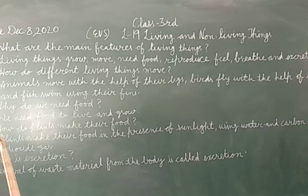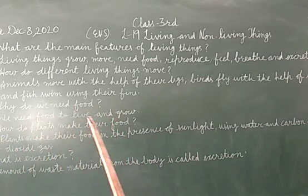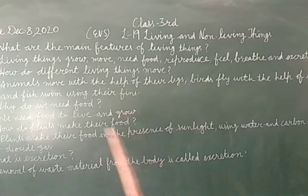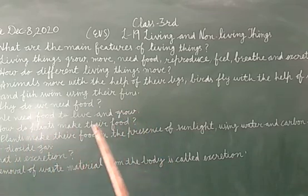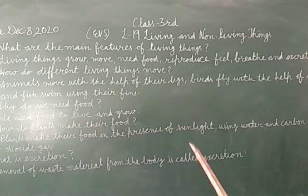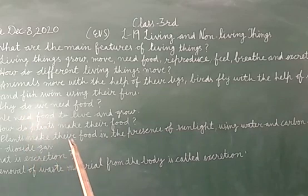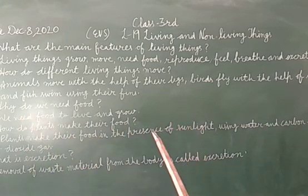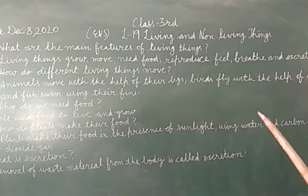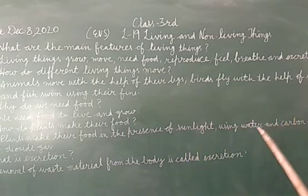Next question is: how do plants make their food? Plants apna food kaise banate hain? Answer is: plants make their food in the presence of sunlight using water and carbon dioxide gas. Jo plants hoti hain, woh sunlight ki presence mein — means suraj ki roshni mein — paani aur carbon dioxide gas use karke apna food banate hain.